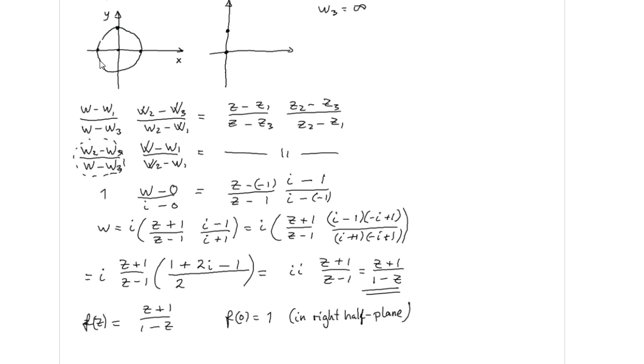So these three points were mapped onto the line here: 0, i, and infinity.